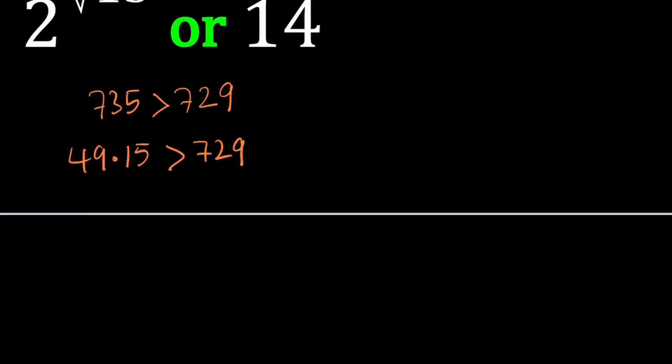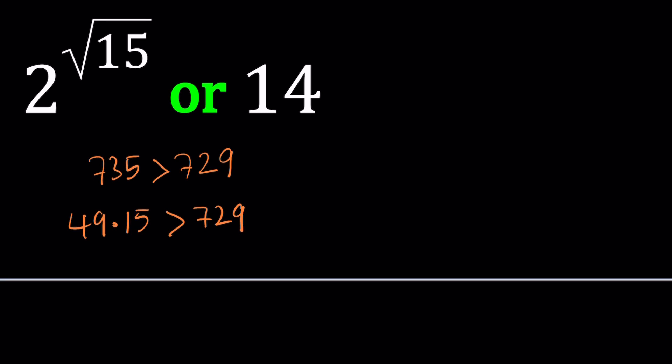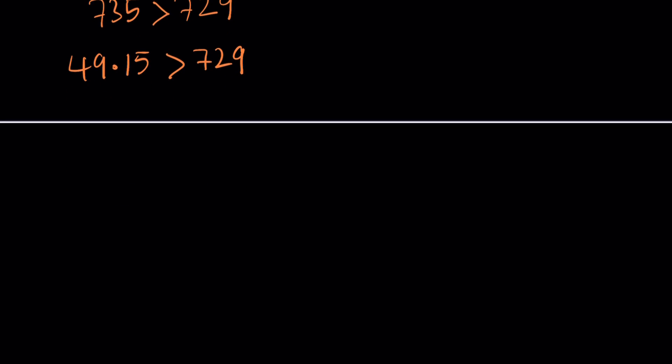Since I have square root of 15 on the left hand side as an exponent, I'm going to go ahead and isolate 15 and write this as 15 is greater than 729 divided by 49. Now, this is really cool. You know why? Because both 729 and 49 are perfect squares. And we now are able to compare 15 to the ratio of two perfect squares. Why is that important? Because we're about to take the square roots.